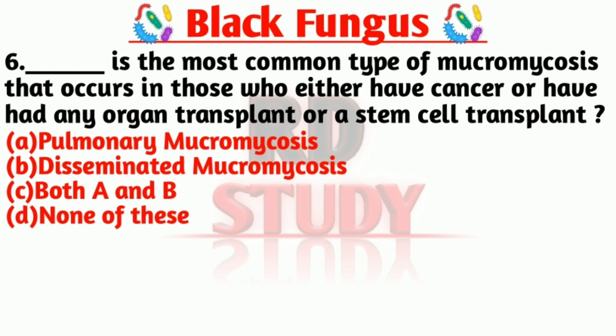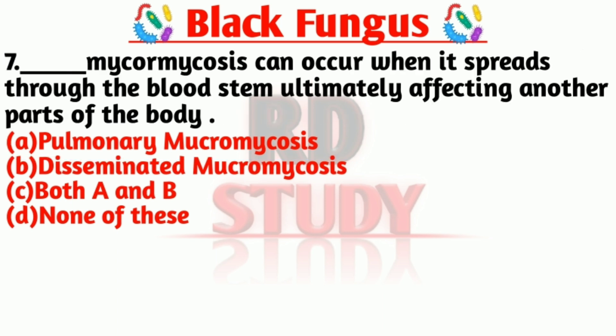Our next question is: dash is the most common type of mucormycosis that occurs in those who either have cancer or have had any organ transplant or a stem cell transplant. The answer is option A — Pulmonary Mucormycosis. Pulmonary mucormycosis is the most common type in those with cancer or organ/stem cell transplants.